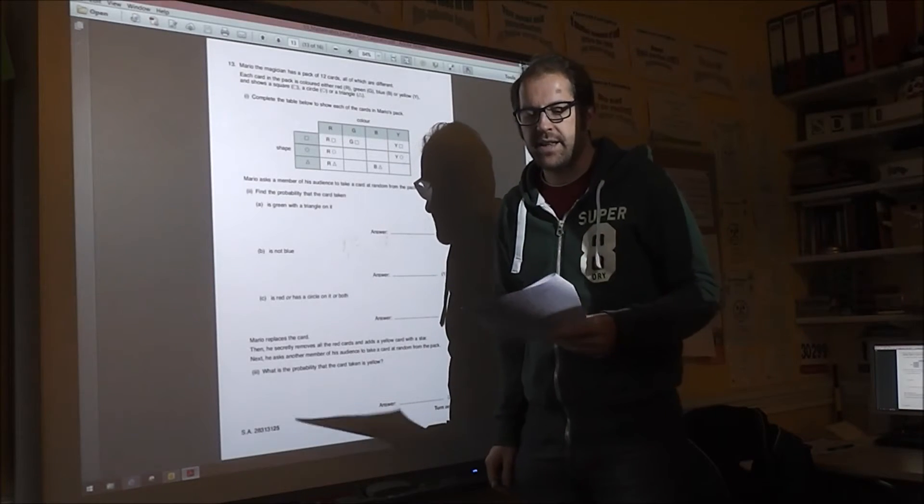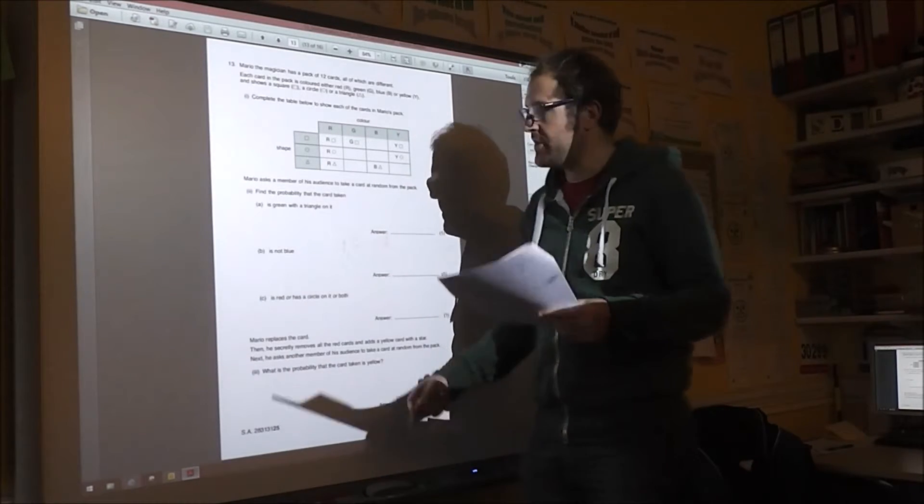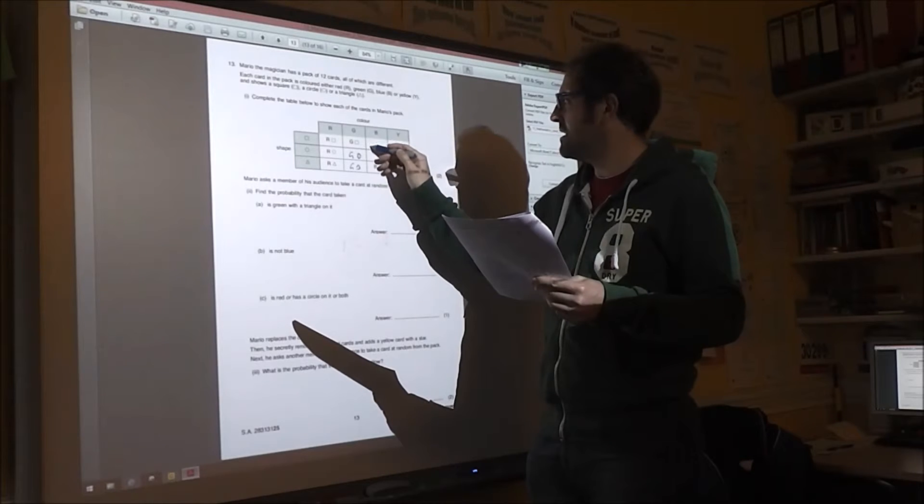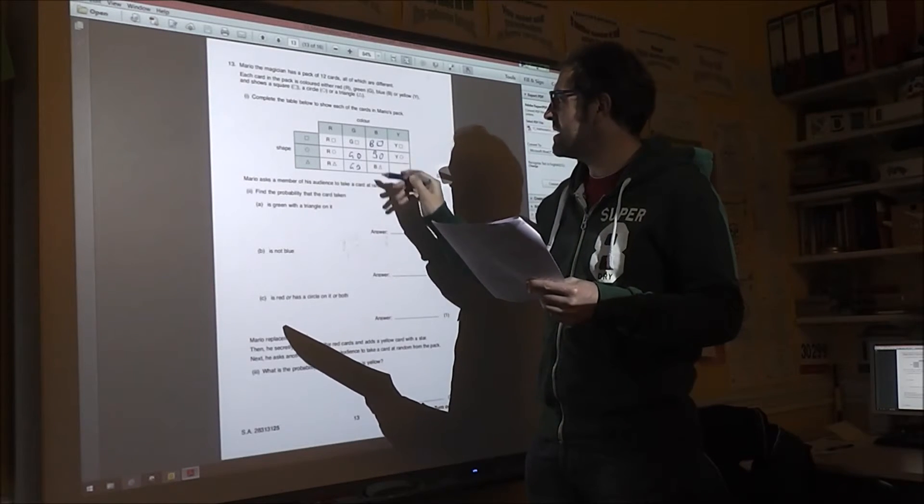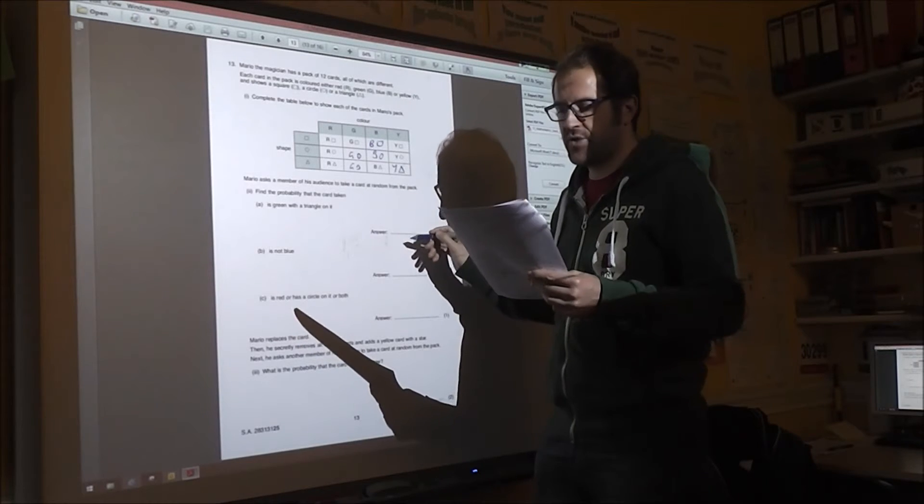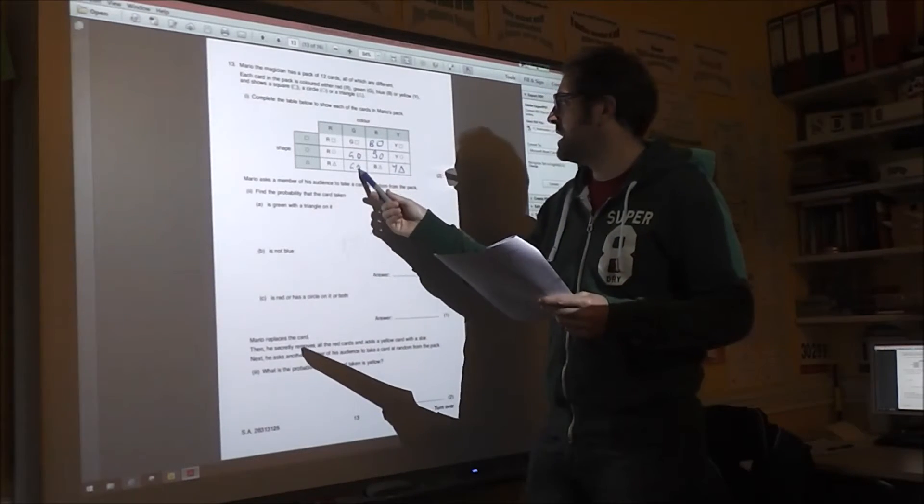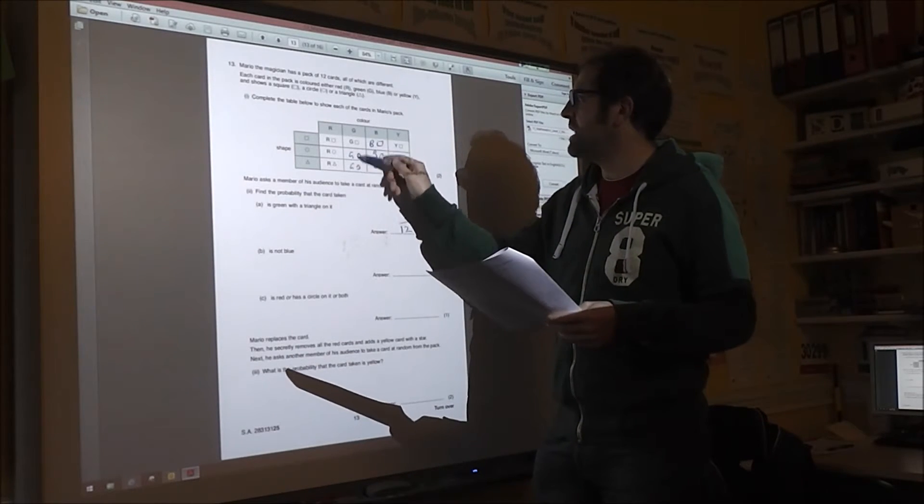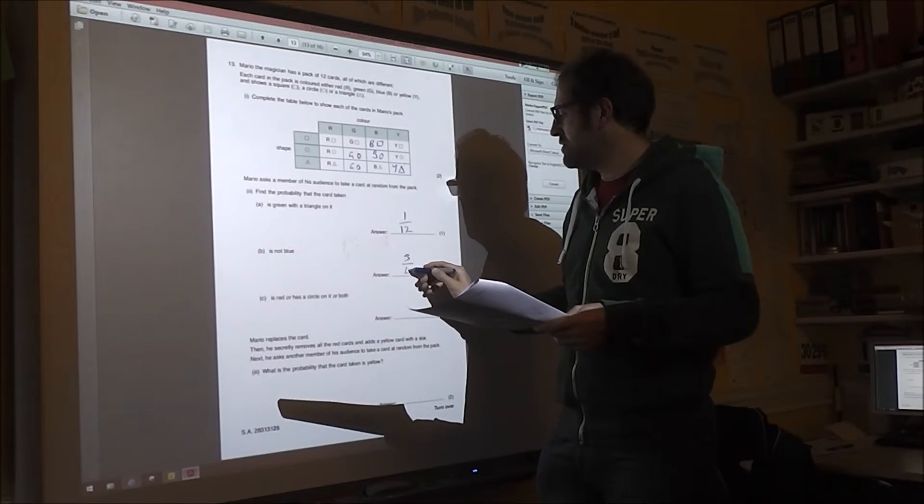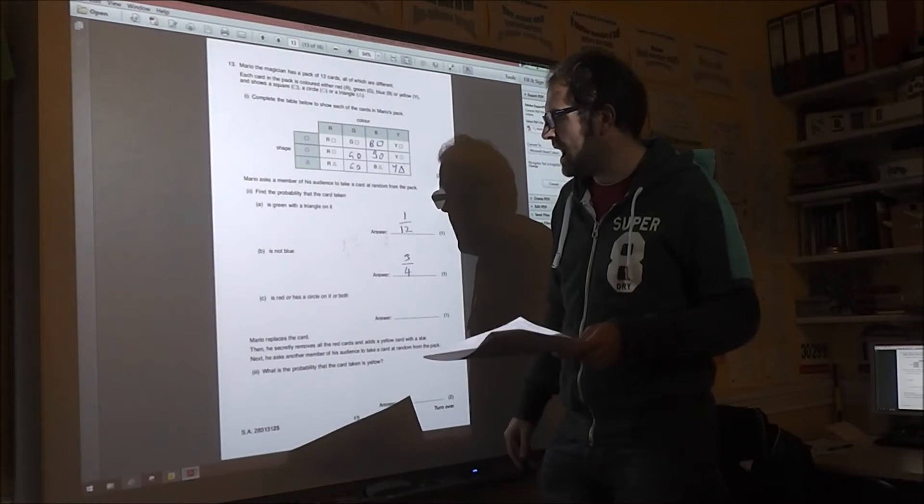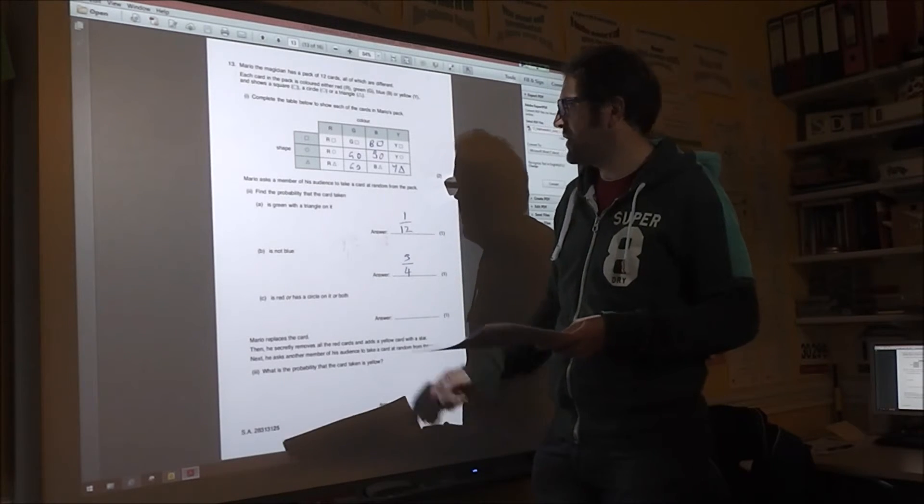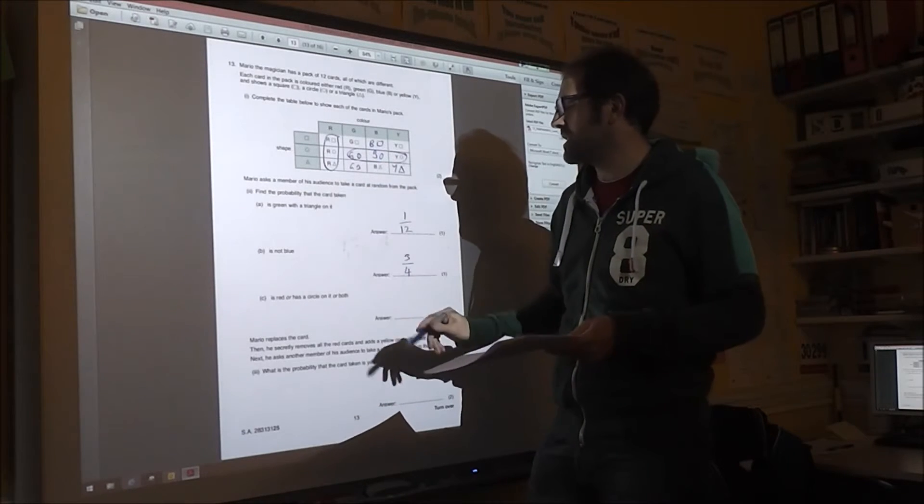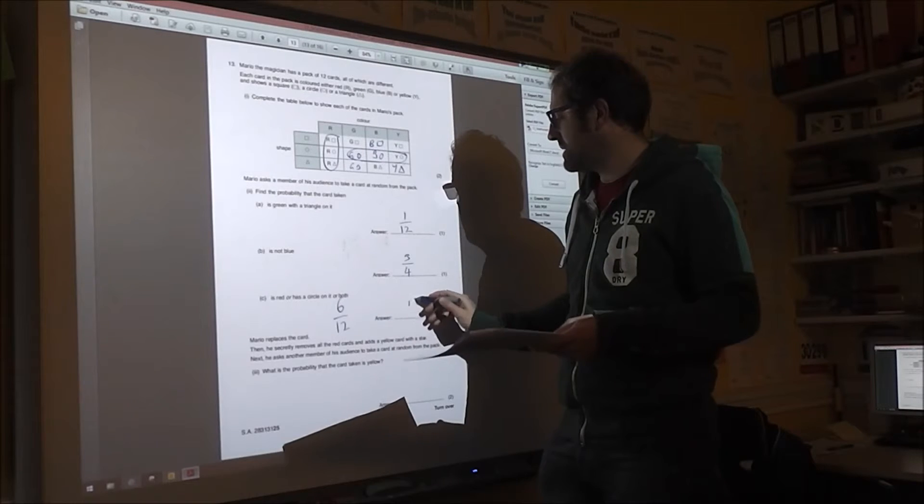Number 13 is about Mario the magician. So fill in the table. There's pretty easy marks here. So make sure you get the table right. Blue square, blue circle, blue star, yellow triangle. Yellow triangle is green with circle on. There's only one of those out of 12 possibilities. It's not blue. Well, there are nine out of 12, which is three quarters. It has red on or circle on or both. So those ones are red. Those ones have circles. Don't count that one twice. There are six of them, which means it's a half.